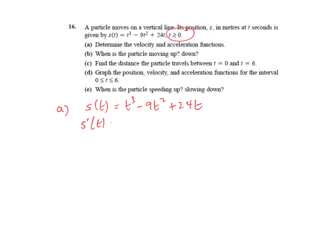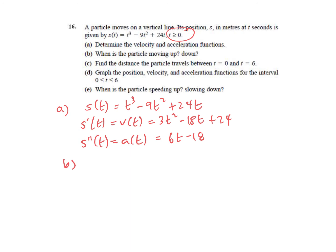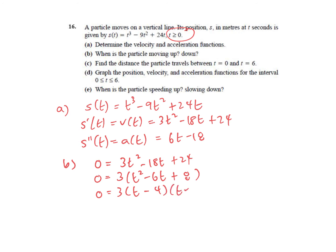The displacement equation is given. We want to determine the velocity and acceleration functions. The first derivative is the velocity function, and then the second derivative is the acceleration function. Part B asks when the particle is moving up or down. We're going to use the velocity function to determine when it's stopped, so we'll set that equal to zero, factor out the common 3, factor the quadratic, and we can see it stopped at two seconds and at four seconds.